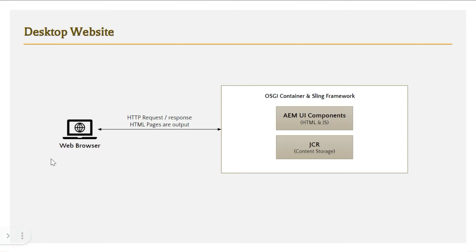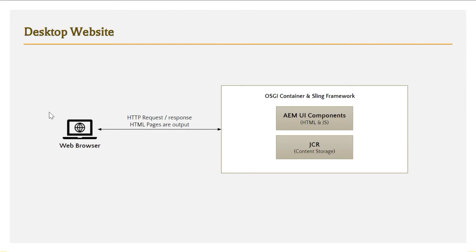So this is how AEM is working. You have the web browser sending a request, then you have AEM UI components built on OSGI and the Sling framework. The AEM UI component — HTML and JavaScript — specifies how to render the content, and the content itself is saved in JCR. Once the client requests a page, all this processing happens and the output is sent as HTML pages. When you pull AEM in this format you go through AEM UI components and JCR, and the output is HTML. One limitation here is that this website is suitable only for web browsers, either desktop or mobile.